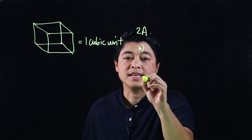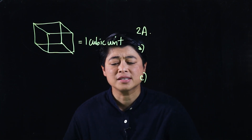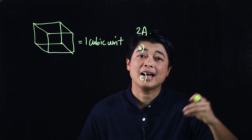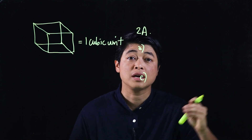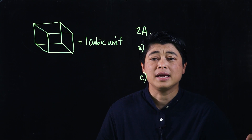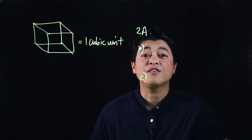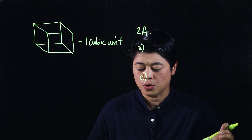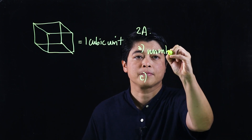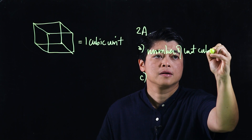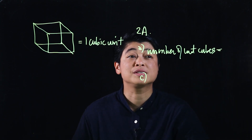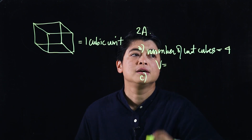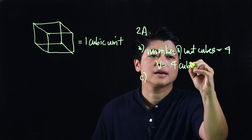On page 150 there are four figures in problem 2a. I shall be discussing only items a and c. The question says: find the volume of each solid. In item a, there are technically four cubes. The number of unit cubes equals four, which means the volume is four cubic units.